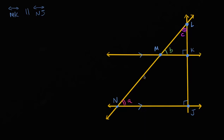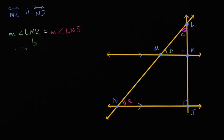Given that and all the other information on this diagram, I'm hoping to prove that the measure of this angle right over here, LMK, is equal to the measure of this angle right over here, angle LNJ. Another way of writing this: the measure of LMK is B, and the measure of LNJ is A. So we want to prove that B is equal to A, using all of this information that we know.